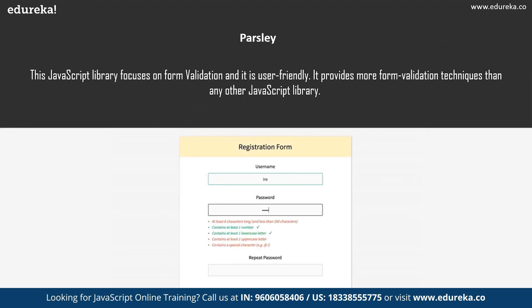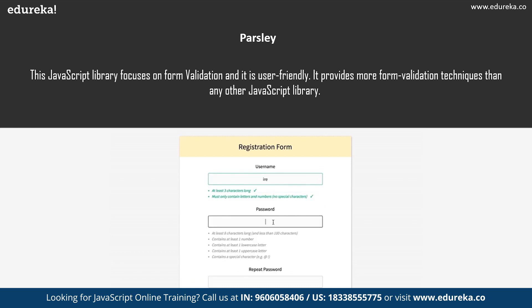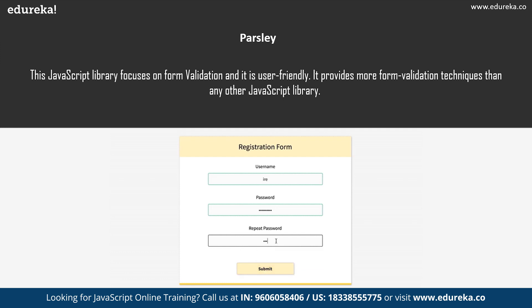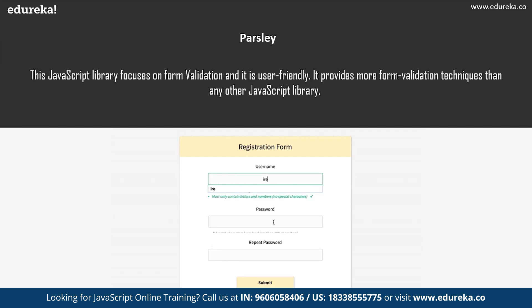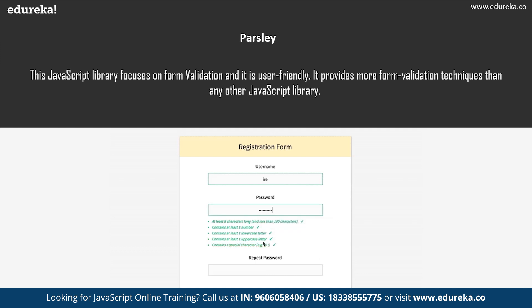Next we have Parsley. If your project incorporates any sort of forms, Parsley is the library you are looking for. This JavaScript library focuses on form validation and is very user-friendly. It also works wonderfully with Garlic — the JavaScript library that keeps form field data until submitted. Parsley provides more form validation techniques than any other JavaScript library, making it one of the best choices for building creative websites with form or email validation.